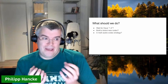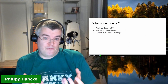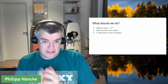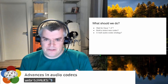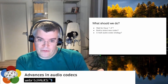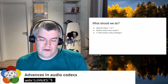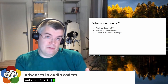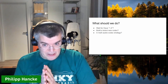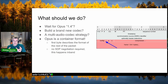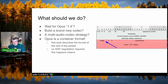So what should we do? Should we wait for Opus version 1.4 to push the envelope further — though there are no current plans for that? Should we build a brand new codec as Google did with Lyra and Microsoft with Satin? Or should we adopt a multi-audio-codec strategy, sometimes using Lyra, sometimes Opus, sometimes G.711? Interestingly, Opus is really a container format — the first byte of the RTP payload describes the format of the rest of the packet, so no SDP renegotiation is required.